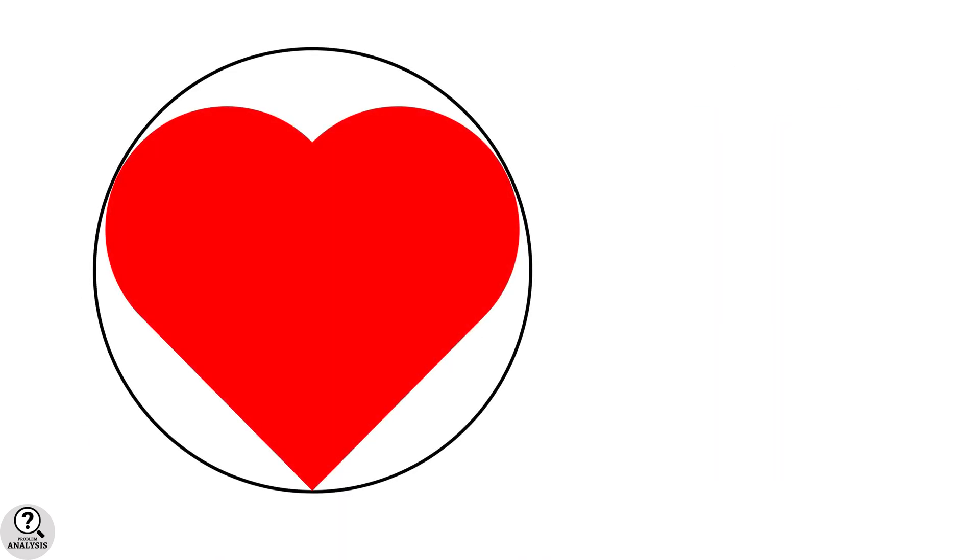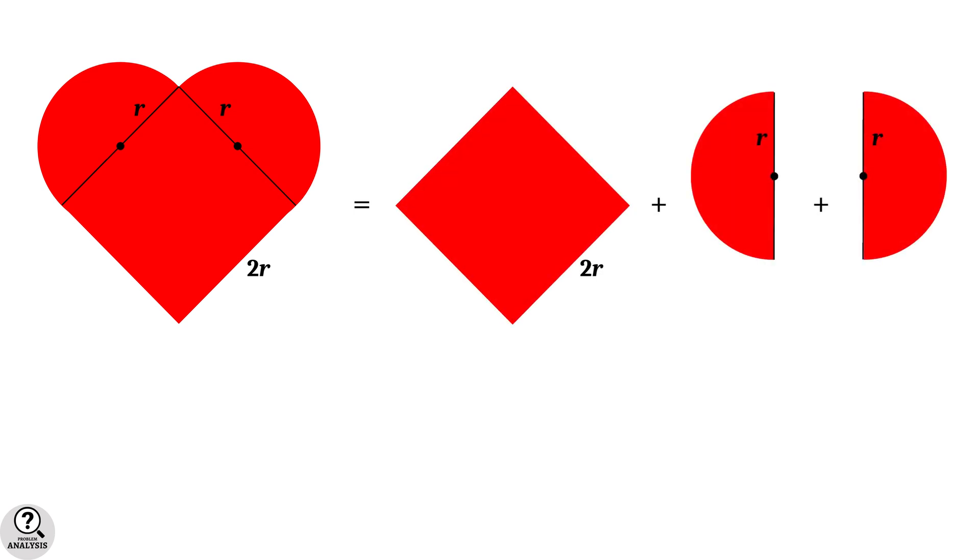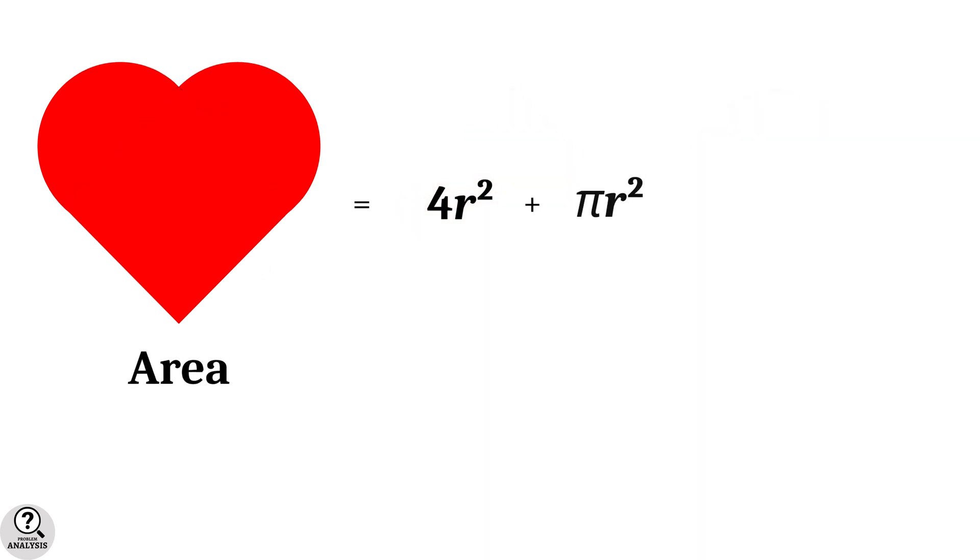In our diagram, consider the heart shape. For the semi-circles, let the radius be r. Then for the square, the side length is 2r. And the area of the heart shape will be sum of areas of the square and the two semi-circles. Note that the two semi-circles together form a complete circle with radius r. Therefore, area of the square is 4r square and area of the circle is pi r square. Hence, area of the heart shape will be 4 plus pi times r square. Then, our aim is to find the value of r.